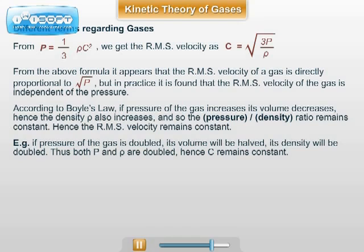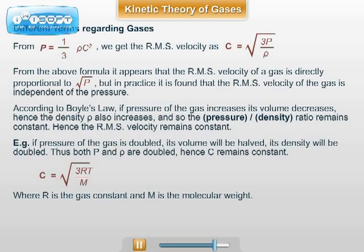For one mole ideal gas, the RMS velocity is given by C equals under root 3RT upon M, where M is the molecular weight of the gas.